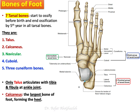Looking at the proximal group, there is a very important bone: the talus. The talus is the only tarsal bone that articulates with both the tibia and fibula to form the ankle joint.